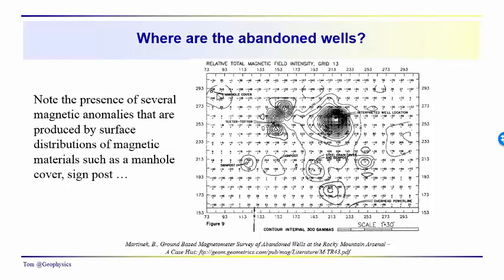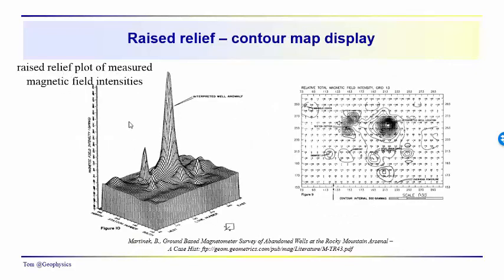You can also see that there are things like manhole covers, a teeter-totter, signpost, and a power line, which produce basically noise. You need to know what's around you, and if you can, you need to stay away from it or at least recognize that you have these features and that the anomalies that you see there really have nothing at all to do with the features that you're looking for.